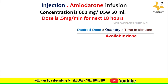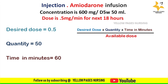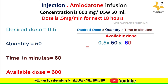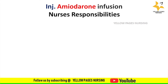For the dose of 0.5 mg per minute for the next 18 hours: desired dose = 0.5, quantity = 50, time in minutes = 60, available dose = 600. Applying the formula gives 2.5 ml per hour. Hence, 0.5 mg per minute is administered as 2.5 ml per hour for the next 18 hours.